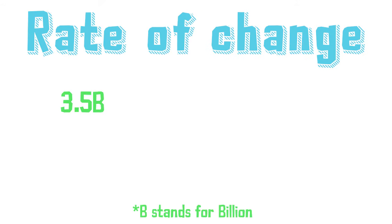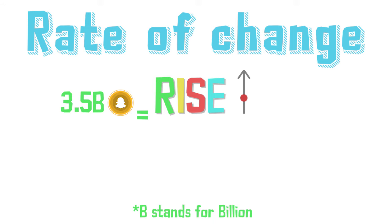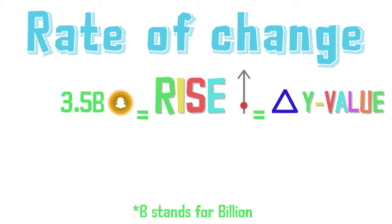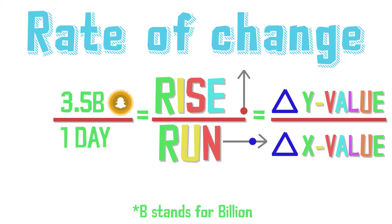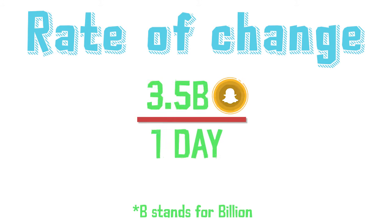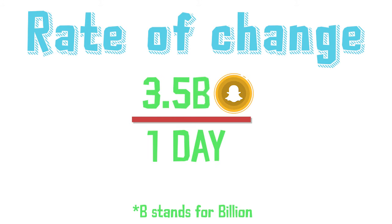The rate of change in this case would be 3.5 billion snaps — the rise, or change in y value — over one day — the run, or change in x value. So the fraction would be 3.5 billion over one day.